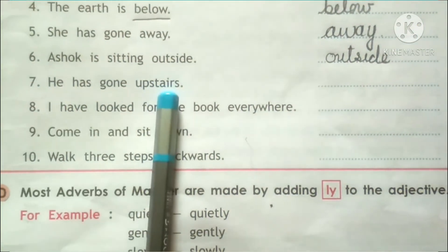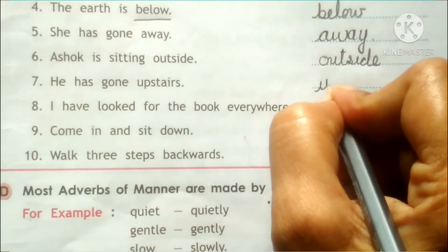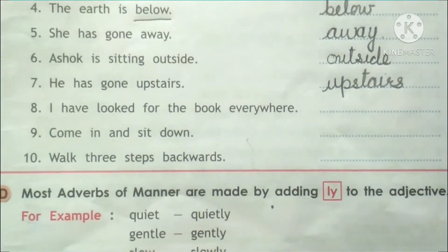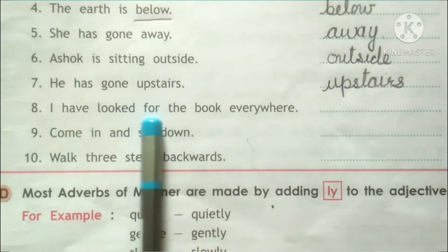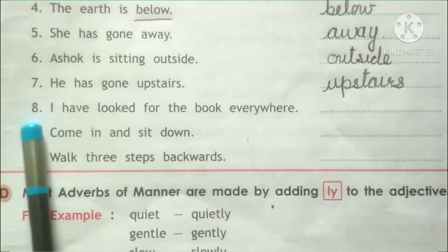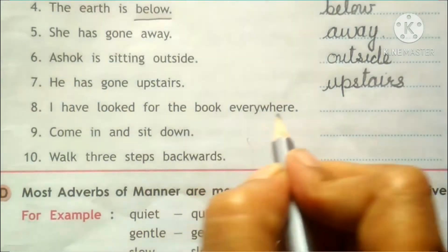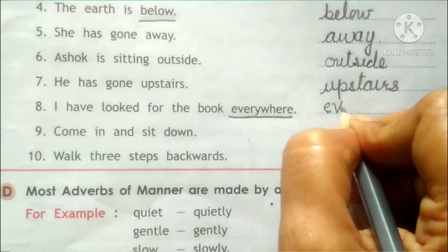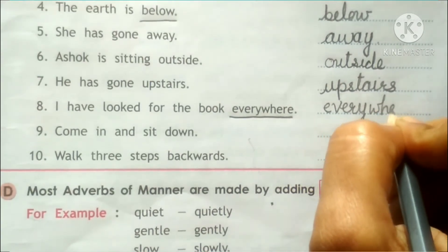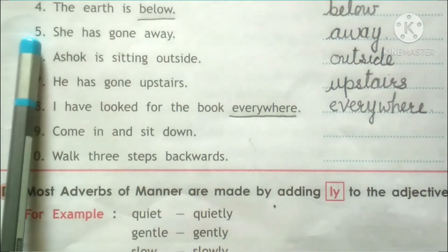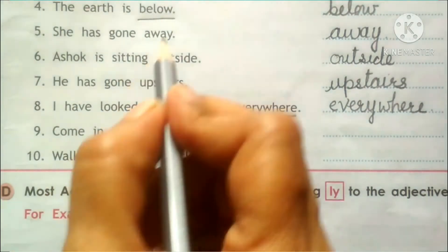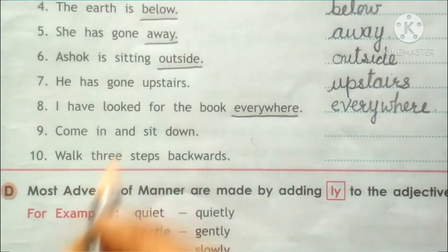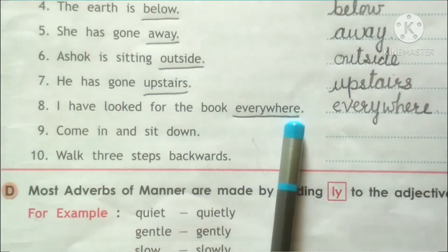Number 7: He has gone upstairs — kahan pe gaya? Upstairs. Number 8: I have looked for the book everywhere — main ne book ke liye sab jagah pe dekha. Everywhere is the adverb of place. So in sentences: she has gone away, Asok is sitting outside, he has gone upstairs, and I have looked for the book everywhere.